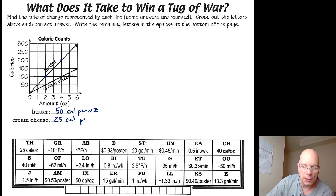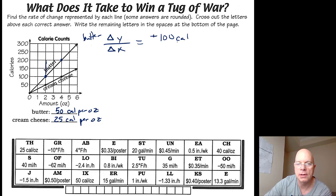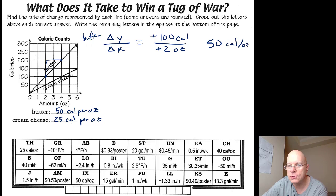If I do the calculation for butter, the rate of change, the slope of the line Delta Y over Delta X, would be going from 100 to 200 calories, so that's increasing by 100 calories. And then I'm going from two ounces to four ounces, so plus positive two ounces. And 100 divided by two is 50, 50 calories per ounce.